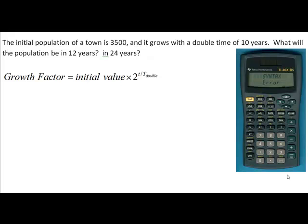In the first problem that we're going to look at in this screencast, the initial population of a town is 3,500 and it grows with a doubling time of 10 years. That means that every 10 years the population will be twice what it was 10 years previous to that. We want to know what the population will be in 12 years and then in 24 years. To do that, we're going to use the formula that appears on your screen already. This will allow us to see what the amount is after both 12 years and 24 years.